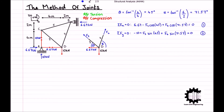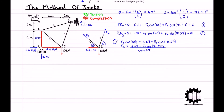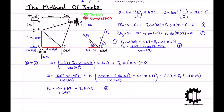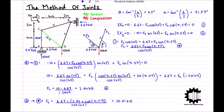Rearranging equation 1, F3 equals 6.67 plus F4 times cosine 71.57, all divided by cosine 45. Substituting into equation 2 gives an equation with only one unknown, F4. Expanding and rearranging, F4 equals 2.64 kN. Substituting this back gives F3 equals 10.61 kN. Since F3 and F4 are both positive and we assumed a tensile sense, the axial forces in bars 3 and 4 are tensile.